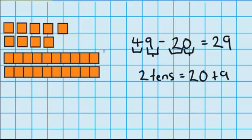So you can see that leaves me with 2 tens or 20. And up here, I've still got my 9 ones. 20 plus 9 is 29, so we got the right answer.